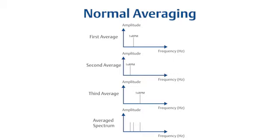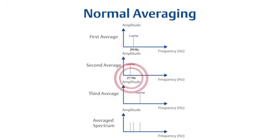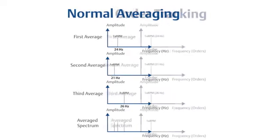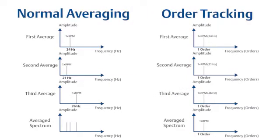Notice in the first average, the imbalance value was at 24 Hz. In the second, the value was down slightly to 21 Hz, but the third average was back up to 26 Hz. So the average spectrum will show you three peaks, but the data is misleading due to the variable speed. But if you can add speed data using a TAC sensor, you can perform order tracking.